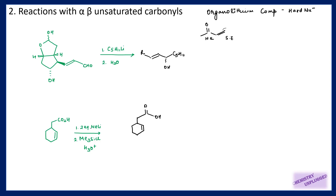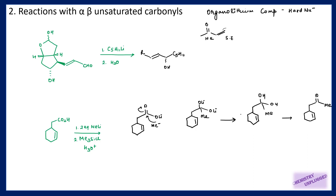So here we are using methyl lithium. The first equivalent will remove this hydrogen because it is acidic in nature, so it will be removed and Li will attach here. The second equivalent of methyl lithium will attack on this carbonyl carbon and attach like this. Next we are using trimethylsilyl chloride, which will replace this lithium, and then we are doing hydrolysis, so ultimately a ketonic group is attached here.